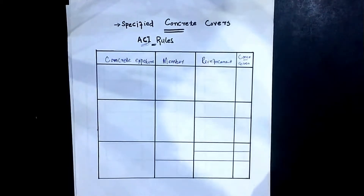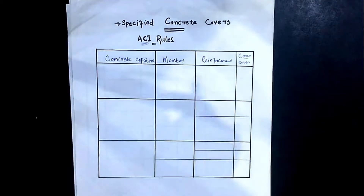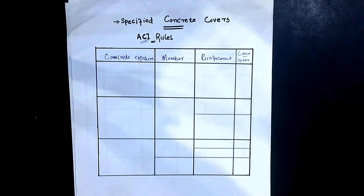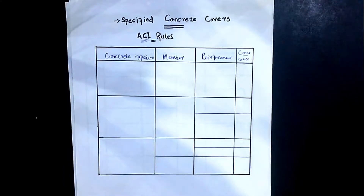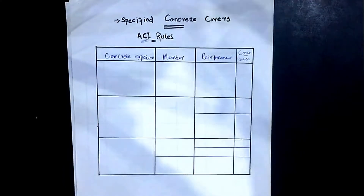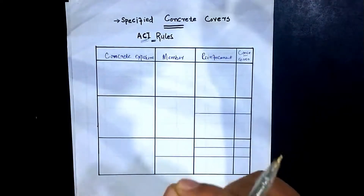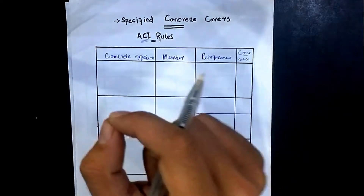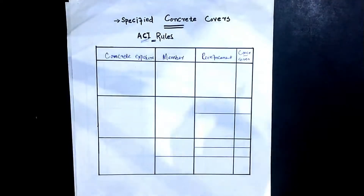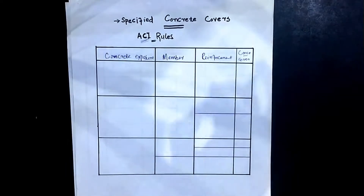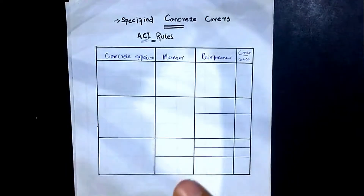I'm going to talk about clause number 20.6.1.3.1 of ACI 318-14. Please listen to this video completely, because at every point I will not just be talking about the concrete cover values, but also the importance and reasons for concrete cover.